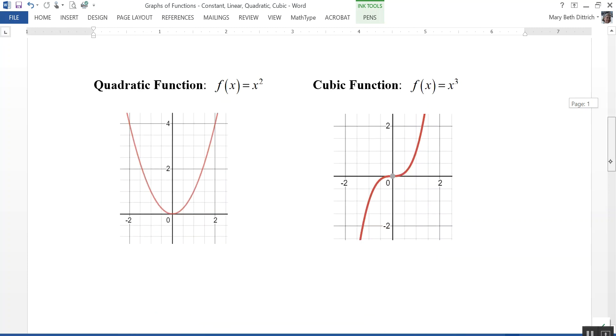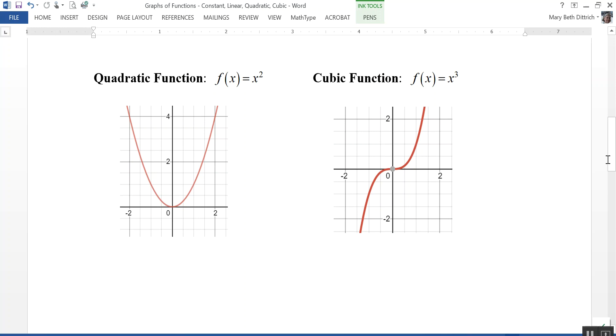The quadratic function is f(x) equals x squared. You may have seen it written y equals x squared. So whatever value you put in for x, you square it and you get your y value or your f(x) value. So for example, when x is 2, 2 squared is 4 and gives me this point right here.